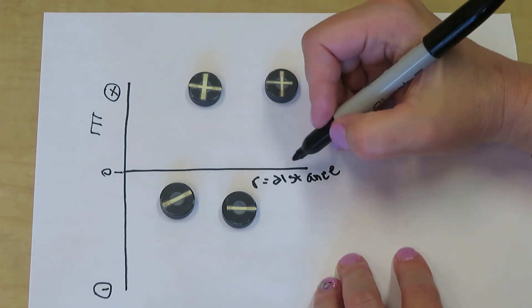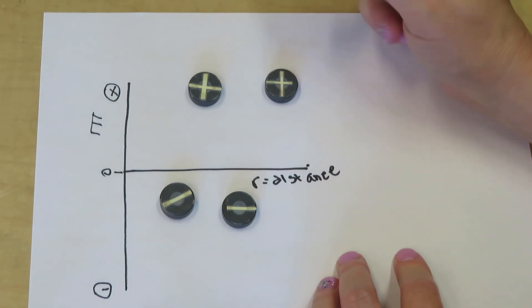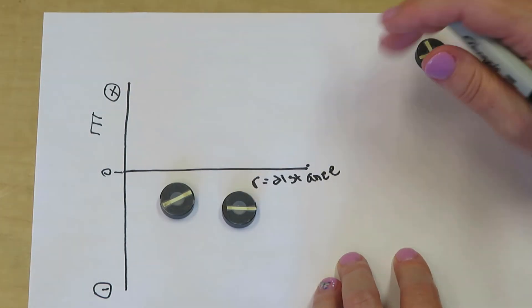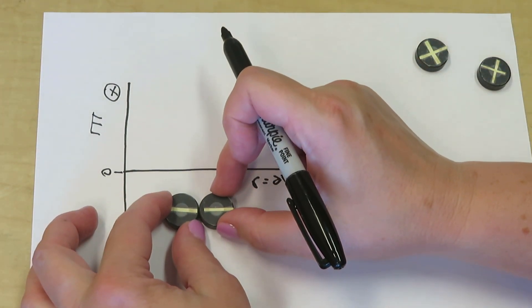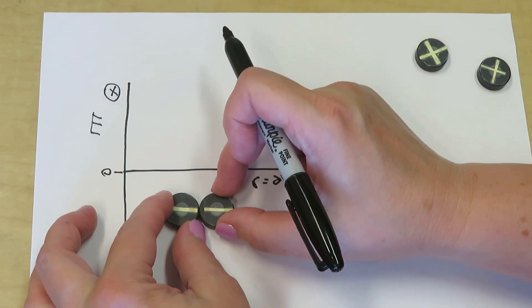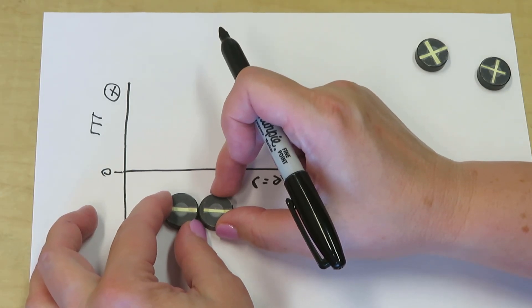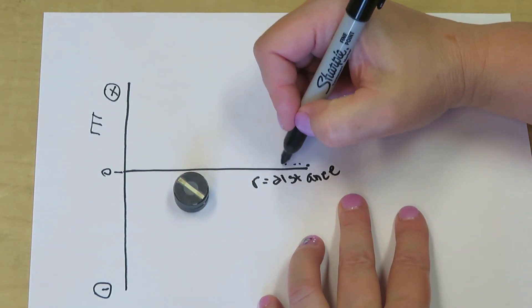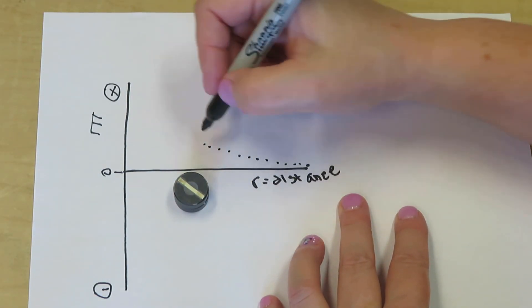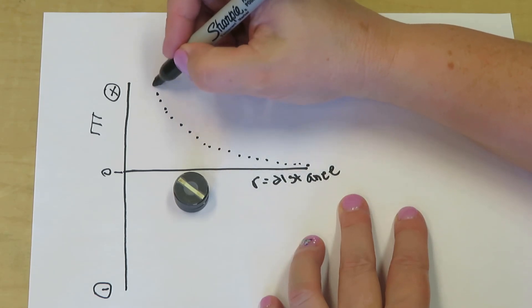However, as they get closer together, we have to push them. We have to put energy in, in order to get them closer together. So what that means is, as they approach one another from infinity, energy will increase, since a force is required to push them closer together.